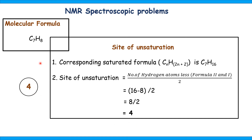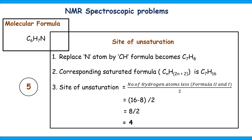Example 4: the molecular formula is C₇H₈. There is no oxygen, halogen, or nitrogen atom, so we directly write the corresponding saturated formula, which is C₇H₁₆. The site of unsaturation equals (16 minus 8) divided by 2, that is 8 divided by 2, equal to 4. The site of unsaturation for this compound is 4.